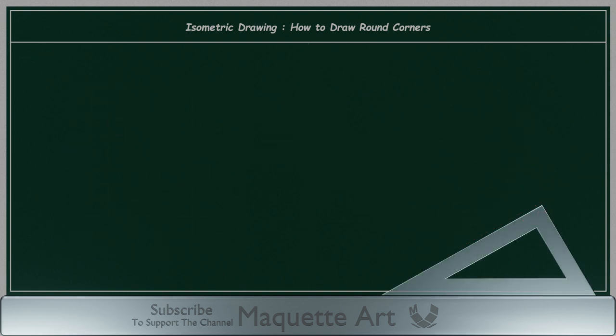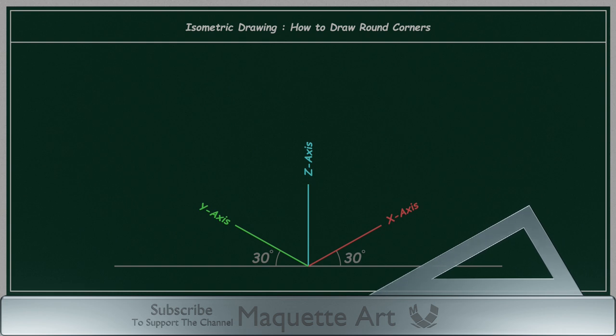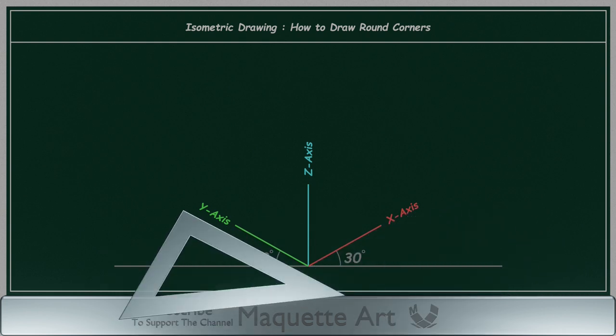But before we start, there is another point that I want to explain. We already know from the previous video that the X and Y axis are at 30 degrees from the horizontal, and the Z axis is a vertical line, and you will be using the T-square and triangle to draw them.